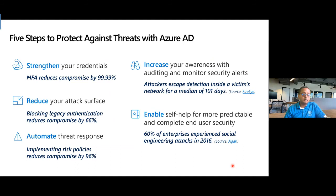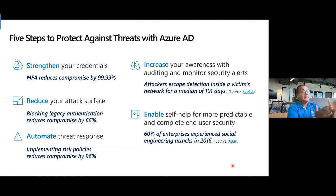Second, automated threat response. I tell this to all my customers — automated incident response is crucial in the modern world. There's no longer a 'golden hour' after a breach before data leaks start. That hour has shrunk down to minutes because of modern computing power and internet upload speeds now in the gigabits. Automated response becomes crucial in mitigating the damage that occurs after a breach.